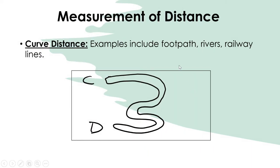Curve distance examples include footpaths used by people living in the interior, and rivers — rivers are never straight, they move in a zigzag direction. Railways also do not always move in a straight line; they too move in a zigzag direction. As you can see from the diagram, from this point to this point it is not straight — these are examples of curve distance.